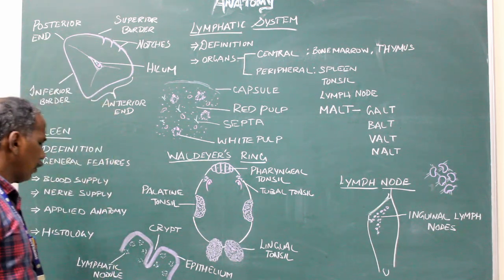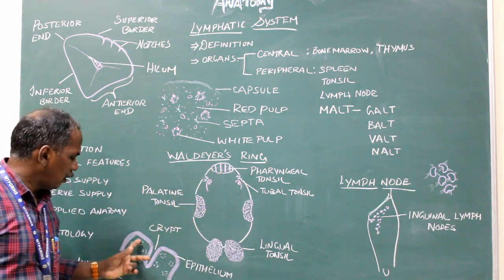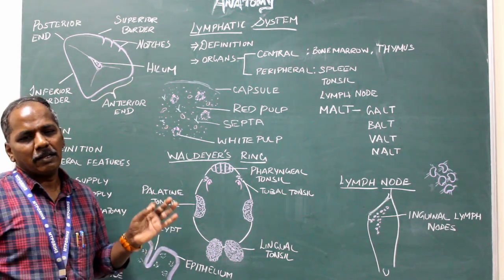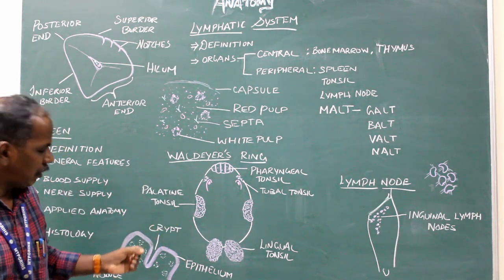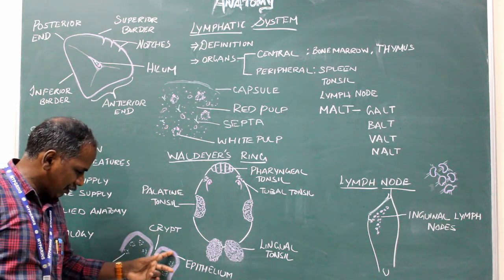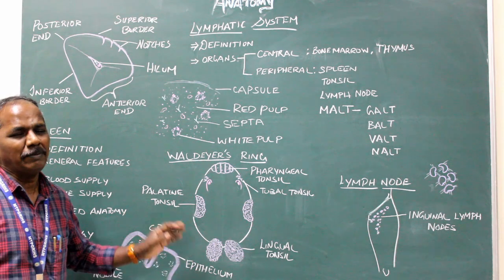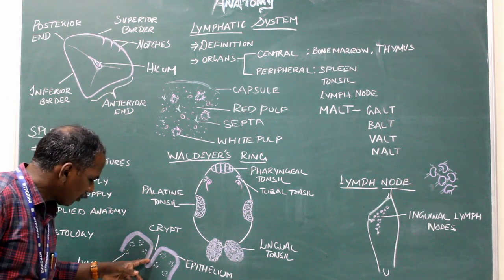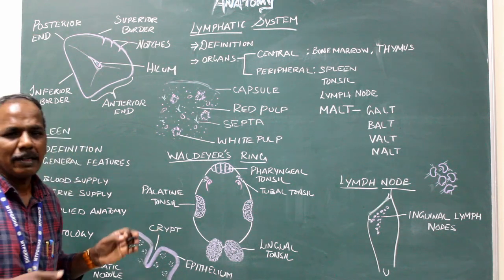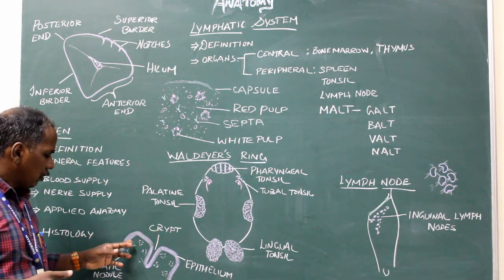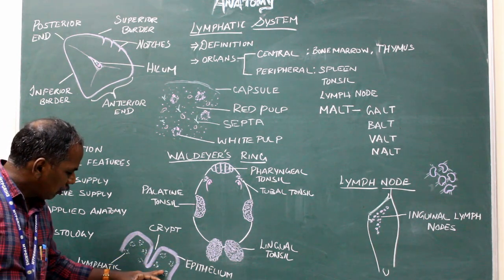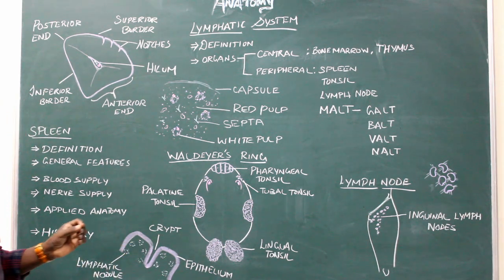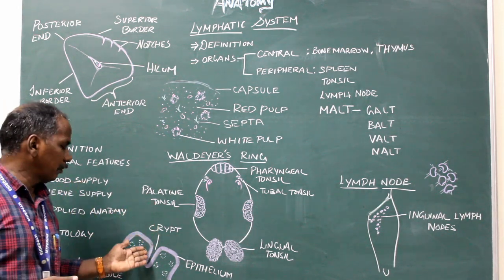Histology of the tonsil. The tonsil is the only lymphatic organ lined by stratified squamous non-keratinized epithelium. The presence of crypts — small pits invaginating into the tissue — is a characteristic feature of the tonsil. Below the epithelium, there are a number of lymphatic nodules. So those are the three key points of the histology of the tonsil.